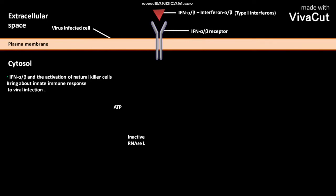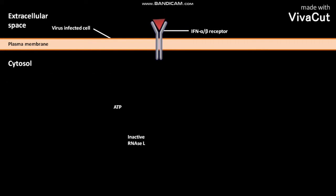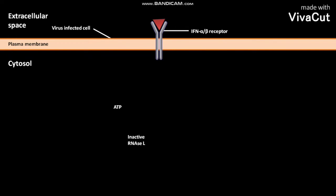The virus-infected cell's plasma membrane has IFN-alpha or beta receptors. IFN-alpha or beta then binds to the IFN-alpha/beta receptor. This binding activates the JAK-STAT pathway.